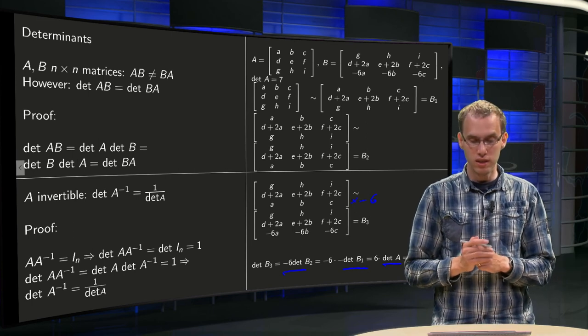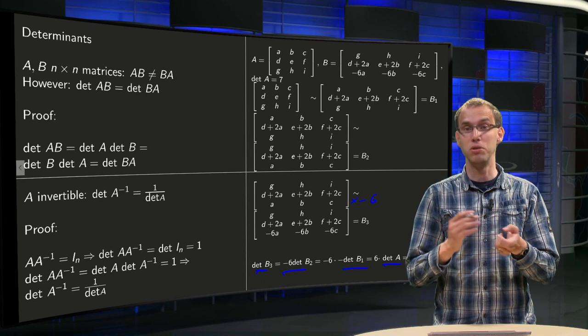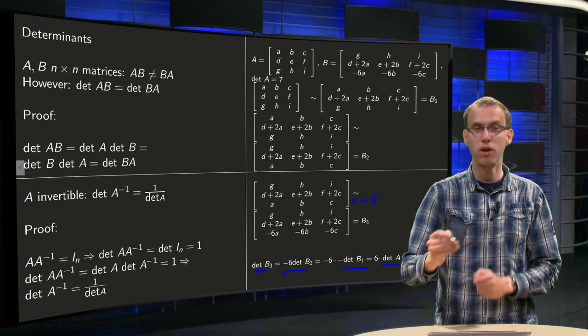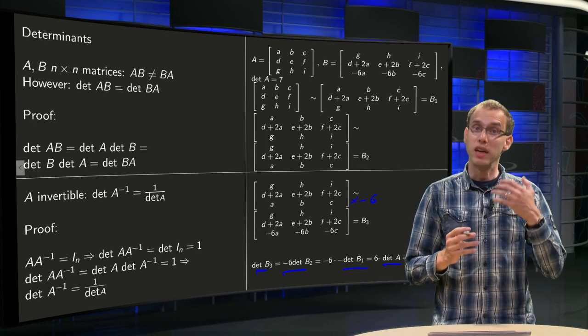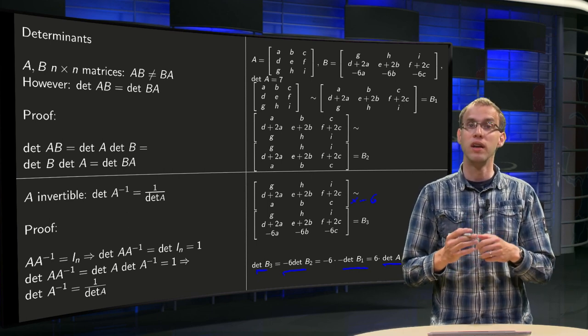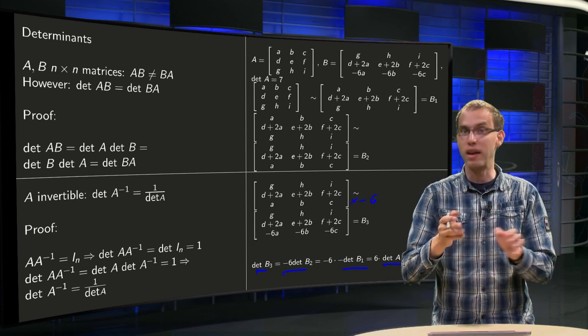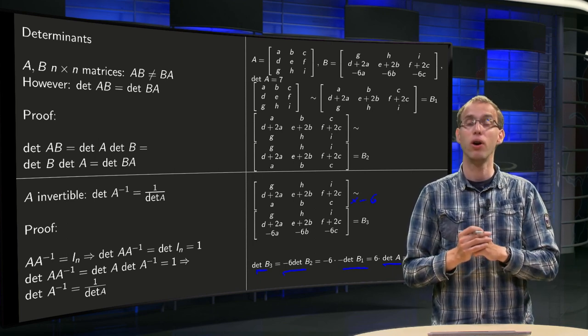So we get the determinant of B3, which equals the determinant of B, equals minus 6 times minus 1 times the determinant of A equals 42. So you see, if you can apply row operations in order to compute determinants, then the computation is usually a lot easier than by just expanding along a row or a column.